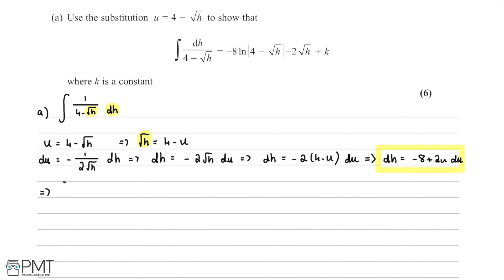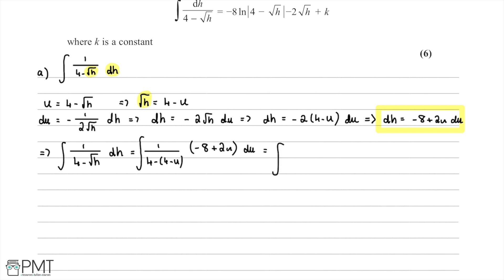The integral of 1/(4 - √h) dh becomes the integral of 1/(4 - (4 - u)) multiplied by (-8 + 2u) du. Simplifying the denominator, 4 - 4 + u = u, so we have the integral of (2u - 8)/u du, which simplifies to the integral of 2 - 8/u du.